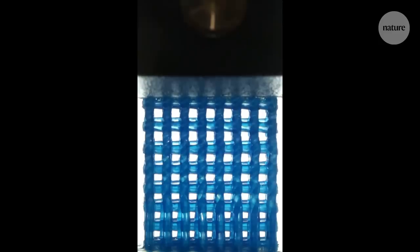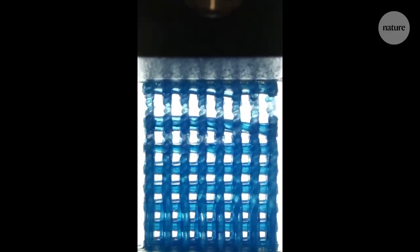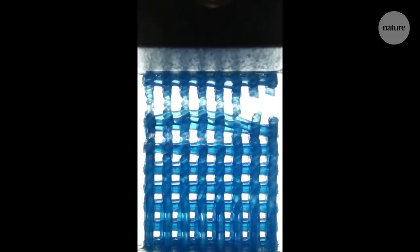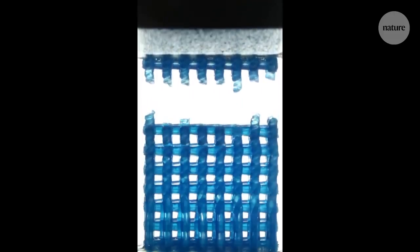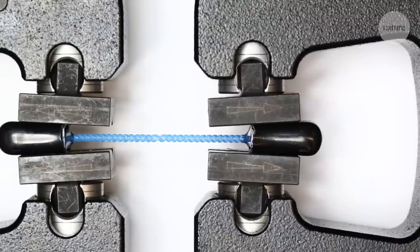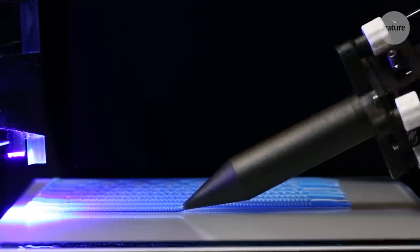But here, part of the top section has a slightly different helix angle, which the researchers use to control exactly where the lattice breaks. This means 3D printed structures can now have different properties in different segments without changing the shapes or materials used.